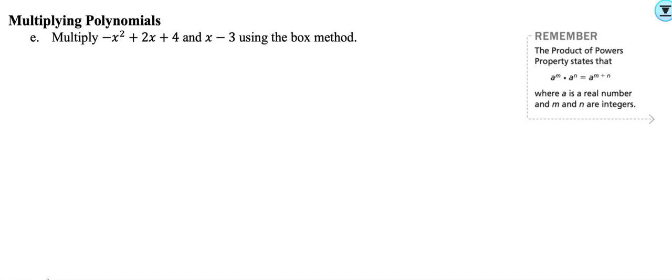All right, so part two we are going to be multiplying polynomials. I'm going to teach you two ways — pick your favorite. First off we're going to be doing the box method, which is my personal favorite. Remember when you are multiplying polynomials you are going to have to add your exponents.